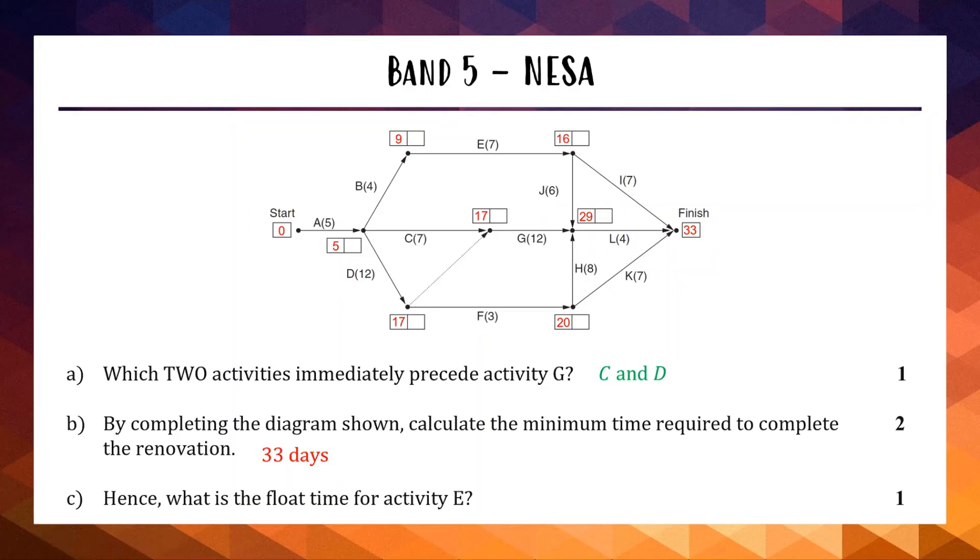Part C is the band 5 part. Part C says hence, what is the float time for activity E? To find the float time for activity E, we need to know what the earliest start time is and what the latest start time. The float time is the difference between these two numbers. It's how much spare time you have. To do this, we have to do what's called backwards scanning, which is a bit tougher. Backwards scanning, we're doing the same thing, but we're in reverse. We're going backwards and we're subtracting numbers. We're always trying to make our second number as small as possible.